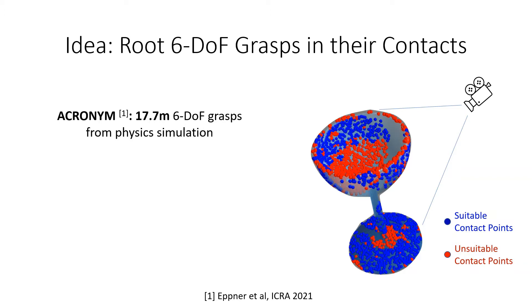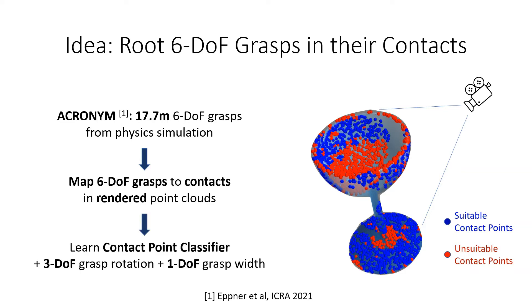We start with the acronym dataset which contains 17 million 6DOF grasps from physics simulation. We map those grasps to contacts in rendered point clouds. Observed points with no nearby successful grasp contacts are considered unsuitable. Then the problem reduces to learning a contact point classifier and for each suitable contact a 3DOF grasp rotation and 1DOF grasp width estimation.